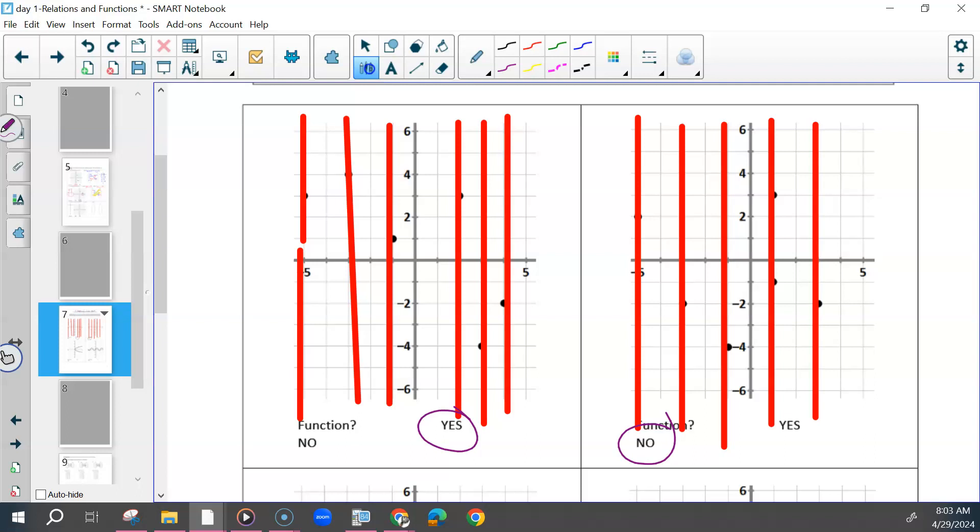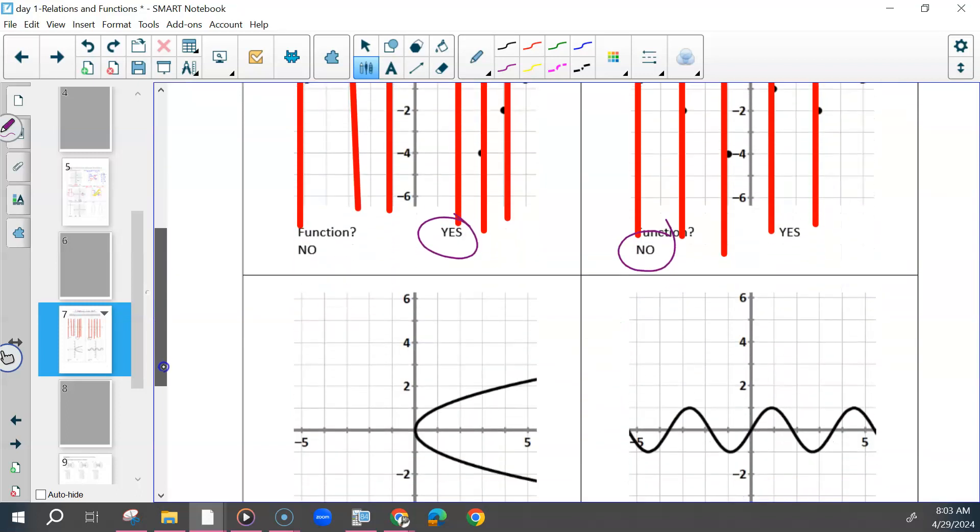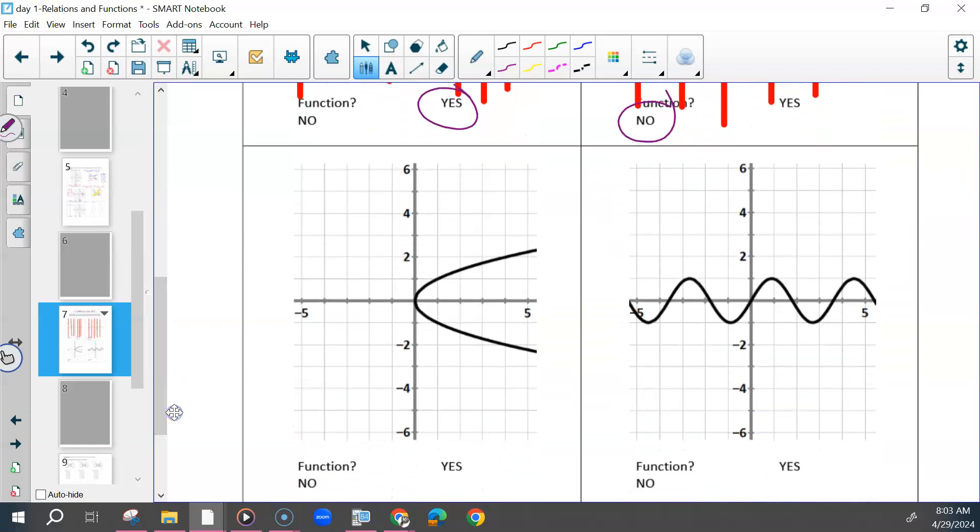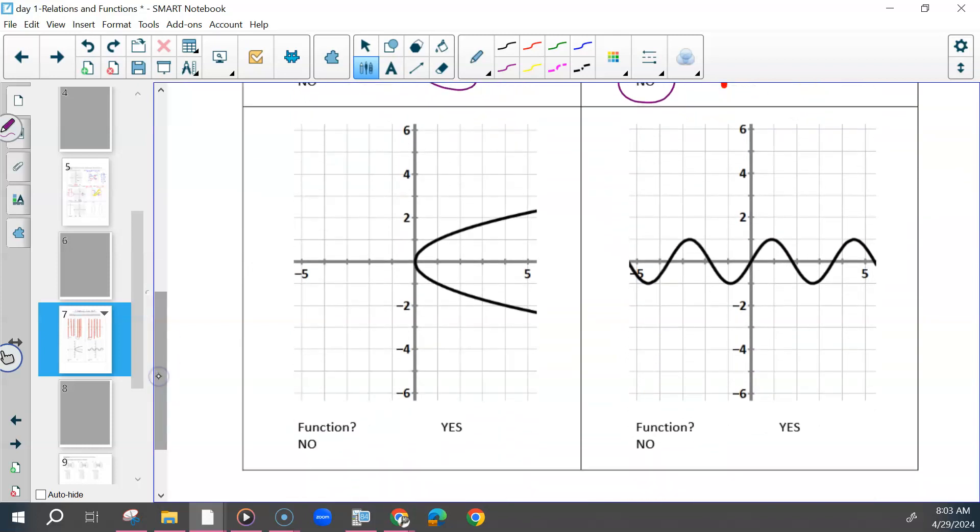So dots, ordered pairs, once they're scattered like this, if you see two on the same x, it's not a function. You could draw in the vertical lines, but if you see that, you don't need to.